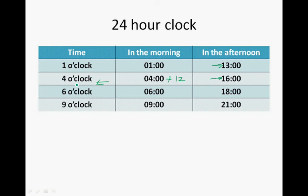6 o'clock in the morning is written as 0600 hours. And if we add 12 onto 6, we get to 18. So 1800 hours is 6 o'clock in the afternoon. 9 o'clock, we go 9 plus 12 and 9 plus 12 is 21. So 2100 hours is the same as 9 o'clock.